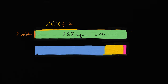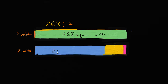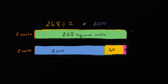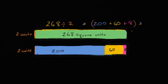Here I have the same field, but I've just broken it up. This dimension right over here is still two units, but I've broken it up. This blue area is 200 units. This yellow area is 60 units. And this magenta area is eight units. Now why is that useful? Well now each of these is much easier to divide by two. All I did is I took the 268 and said, well look, this is the same thing as 200 plus 60 plus eight. I just broke up the 268 into things that are easier to divide by two.